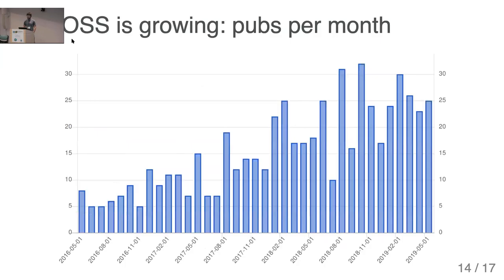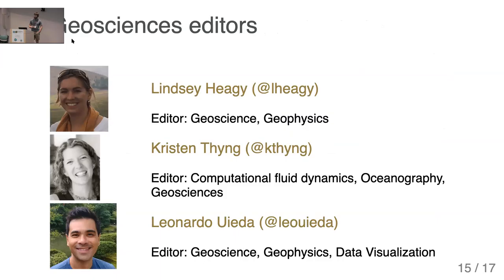JOSS has been growing. Looking at publications per month, we have about 570 publications so far as of this week, and it's been around for almost exactly three years now. There are four geosciences editors: I'm one of them, and the three others are Lindsay Higgy, Tristan Thing, and Leo. Lindsay has been part of JOSS for quite a long time; Kristin joined in the fall and Leo joined earlier this year.